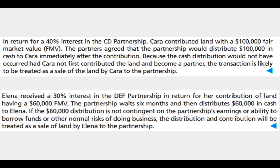In the second example, Elena received a 30 percent interest in the DEF partnership in return for her contribution of land having a $60,000 fair market value. The partnership waits six months and then distributes $60,000 in cash to Elena. If the $60,000 distribution is not contingent on the partnership's earnings or ability to borrow funds or other normal risks of doing business, the distribution and contribution will be treated as a sale of land by Elena to the partnership. Waiting six months doesn't work if there was no business reason for the distribution.